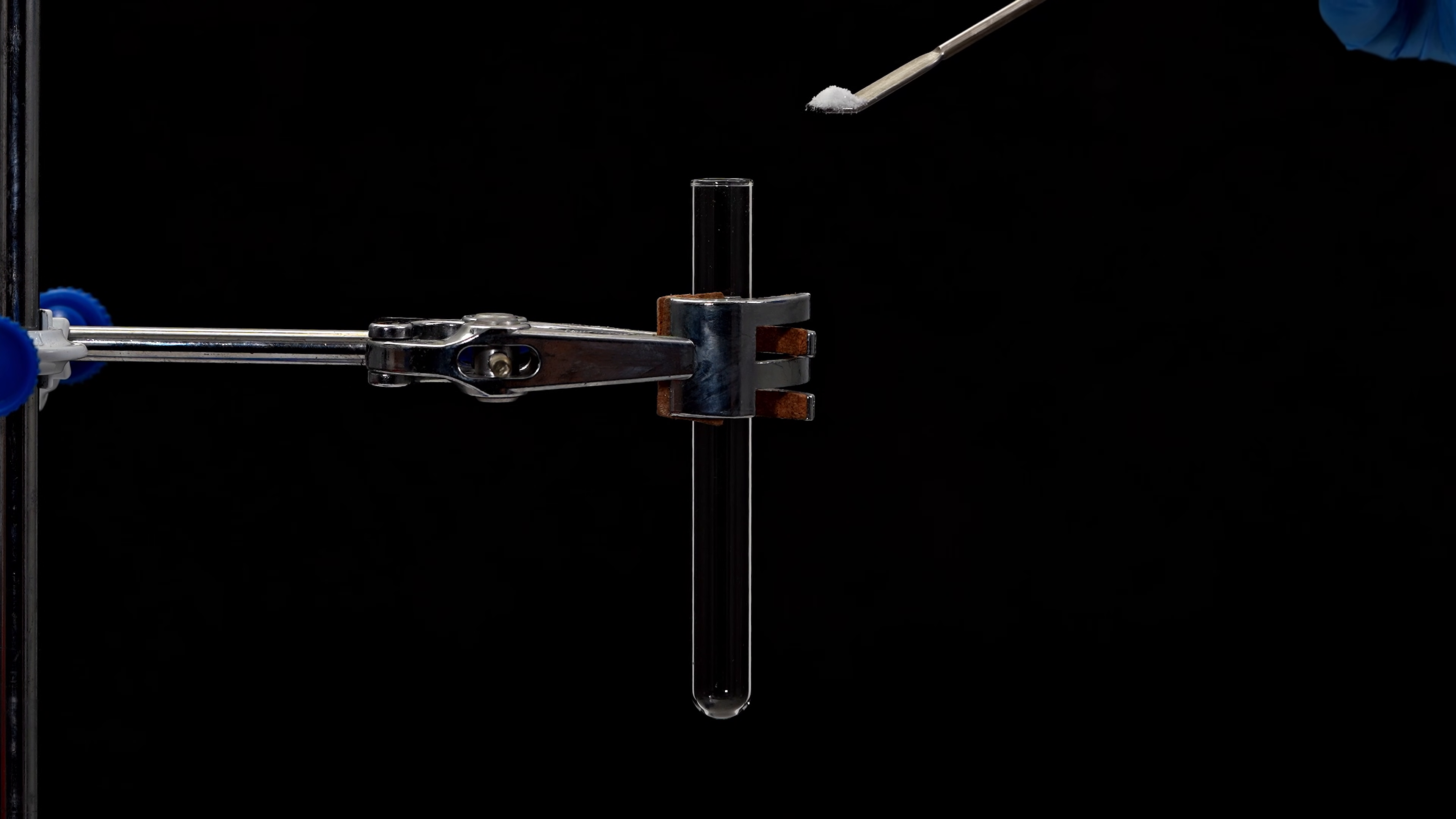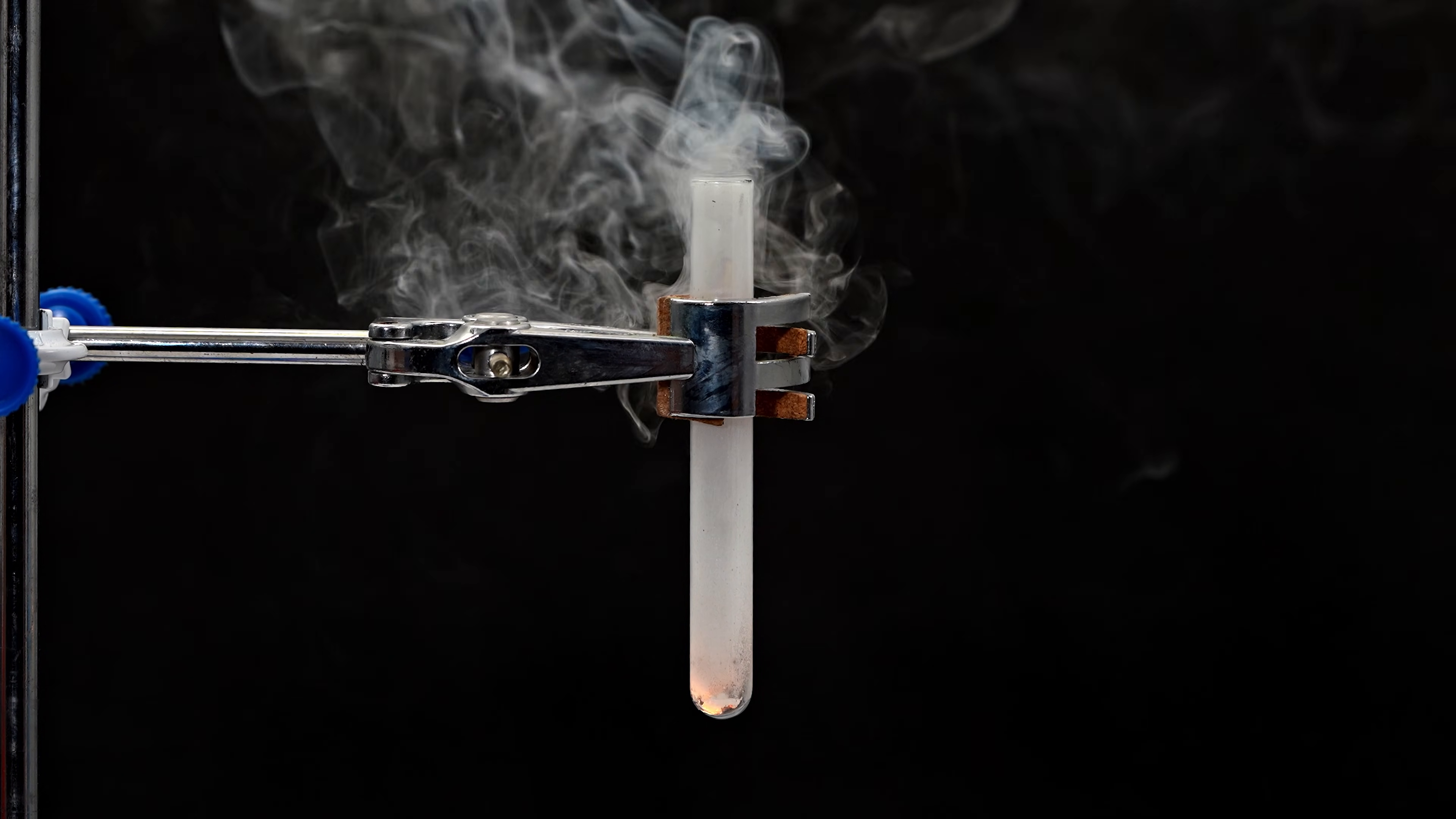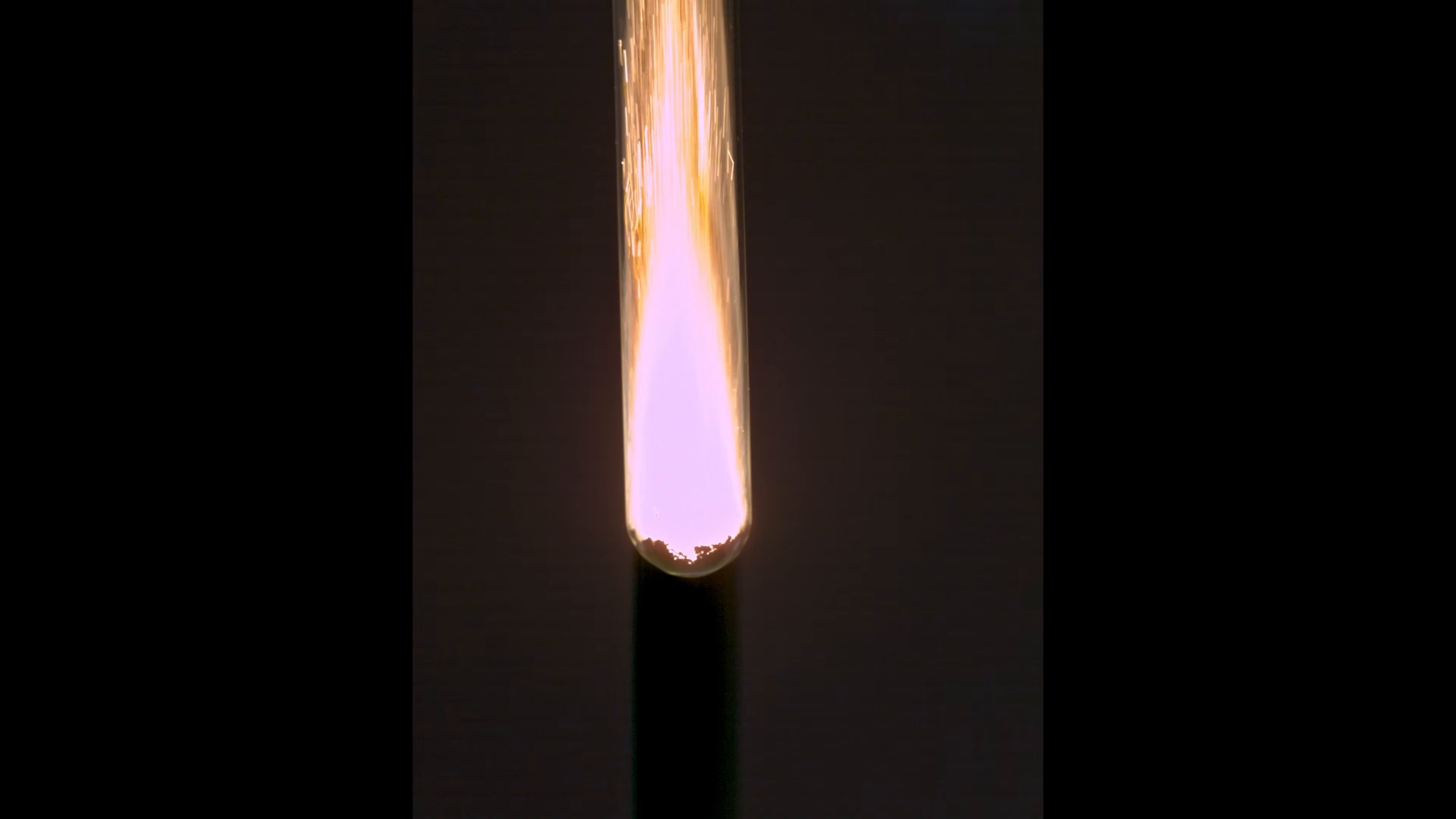For this, I pour a bit of tungsten powder into a test tube, and then add some xenon difluoride powder on top. It took just five seconds for these two solids to start reacting. Notice that after the reaction, nothing is left in the test tube. This clearly indicates that volatile tungsten hexafluoride was formed as a result of the reaction. Since it's a gas at room temperature, it's no wonder there is nothing left in the test tube, the whole reaction product just evaporated.